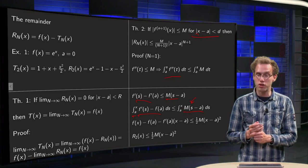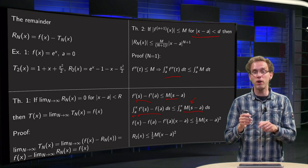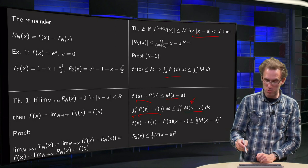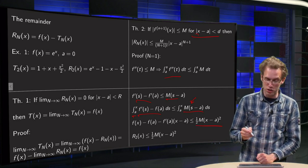And here we integrate with respect to t, so we get f prime in the upper boundary minus f prime in the lower boundary. Where s is some value in the interval |x minus a| smaller than d.